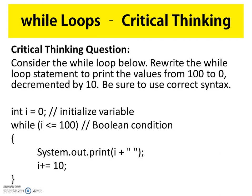Now that you have a little bit of understanding about how the while loop works, we're going to have another critical thinking question. This critical thinking question is in your video review activity — I'm not going to give you the answers, but I am going to provide guidance. Consider the while loop below: rewrite the while loop statement to print the values from 100 to 0, decrementing the counter value, with values decreased by 10 each time. Be sure to use the correct syntax.